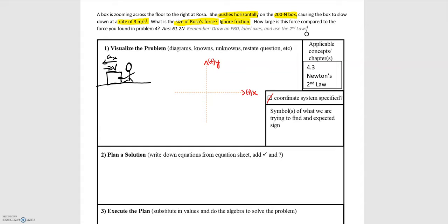I have a picture drawn of this situation where there's a box moving to the right, so it has some velocity V to the right. That horizontal force is causing an acceleration to the left, which is causing the box to slow down.